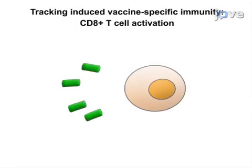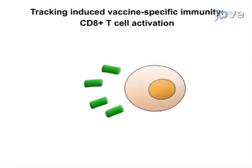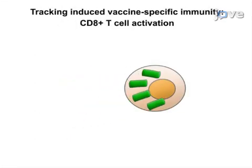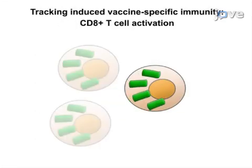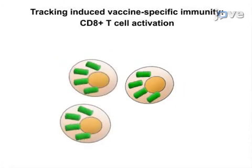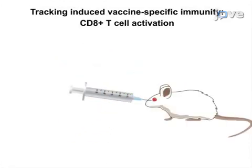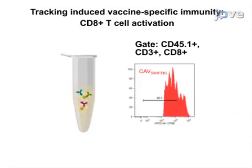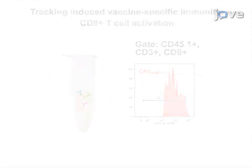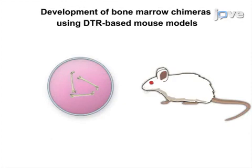In the next assay, CD8-positive T-cells reactive to the immunogenic peptide are labeled and injected into vaccinated mice, followed by FACS analysis to measure the proliferation of those cells.